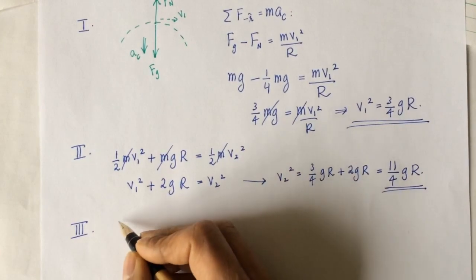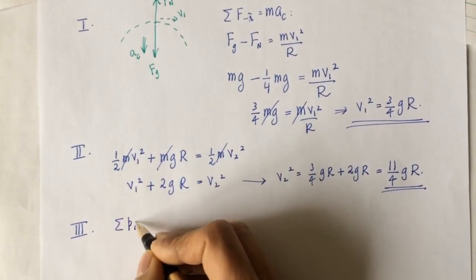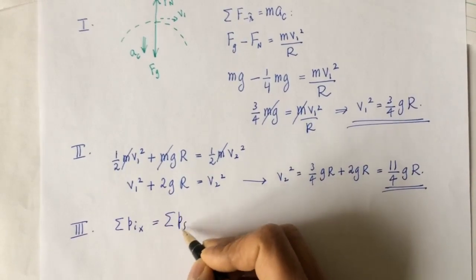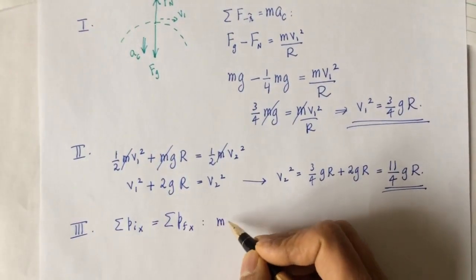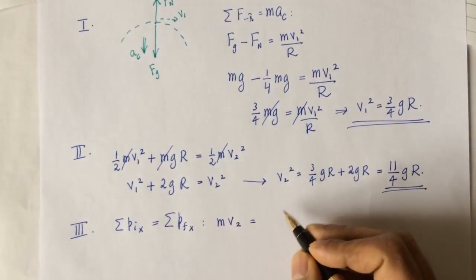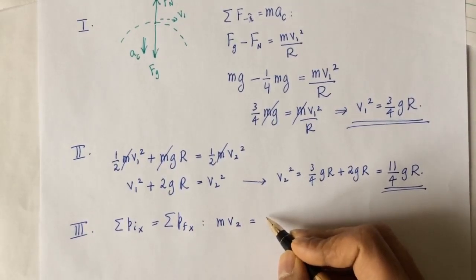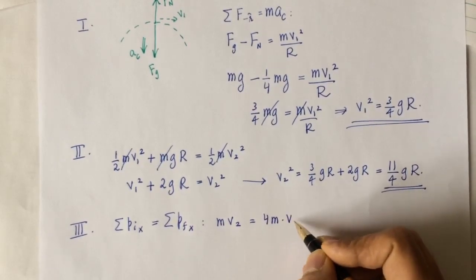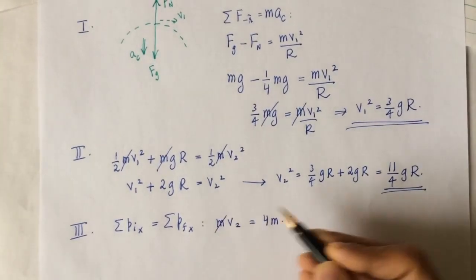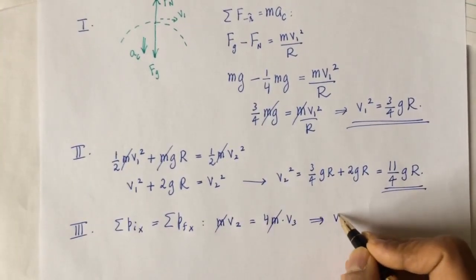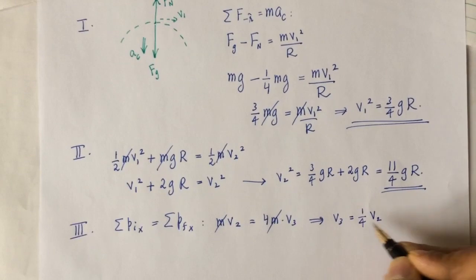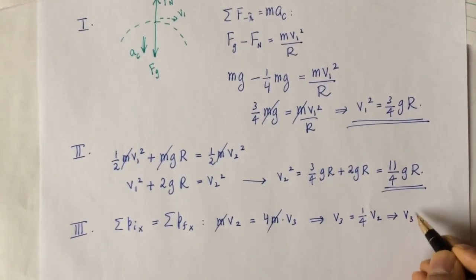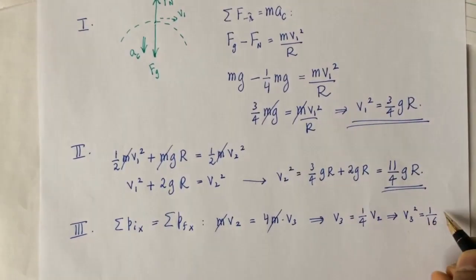The third step is the collision. Momentum is conserved: the initial momentum is m times v2, and the final momentum is (m + 3m) = 4m times v3, since the blocks stick together. This gives v3 = v2/4, and squaring both sides: v3 squared equals v2 squared over 16.